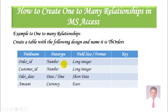We are going to create one more table named tbOrders with the following design. First field: Order ID, data type Number, format Long Integer. Second field: Customer ID, data type Number, field size Long Integer. Next: Order Date, data type Date/Time, format Short Date. And finally: Amount, data type Currency, format Euro.